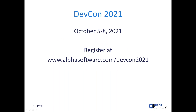Before we get into that, just a reminder: DevCon is coming up. You can register online at www.alphasoftware.com/devcon2021. We have an exciting lineup for this multi-day conference this year. It is digital and it'll be recorded. We're already halfway through July, so September/October is not that far away — maybe three months.